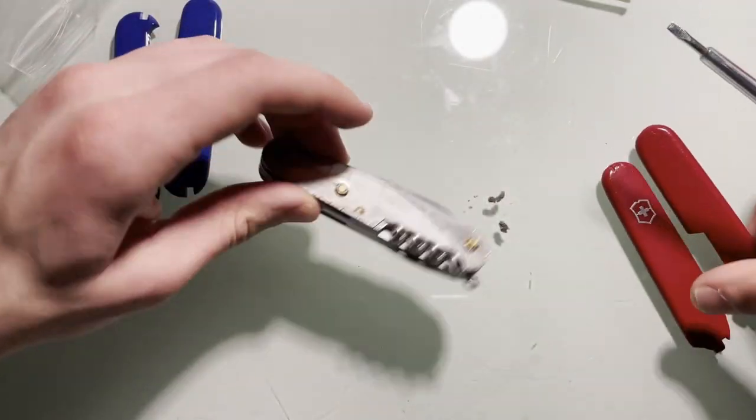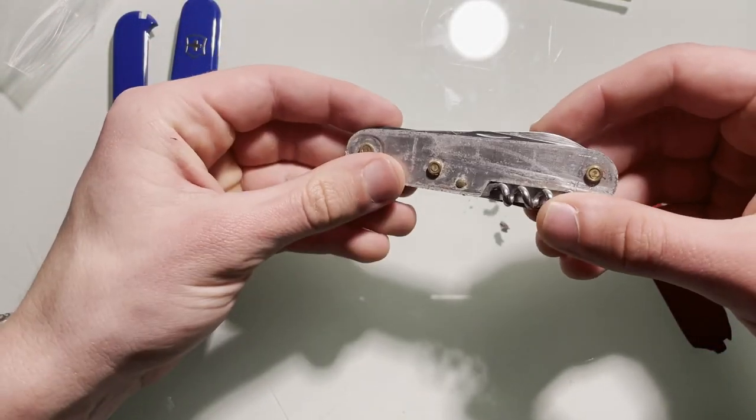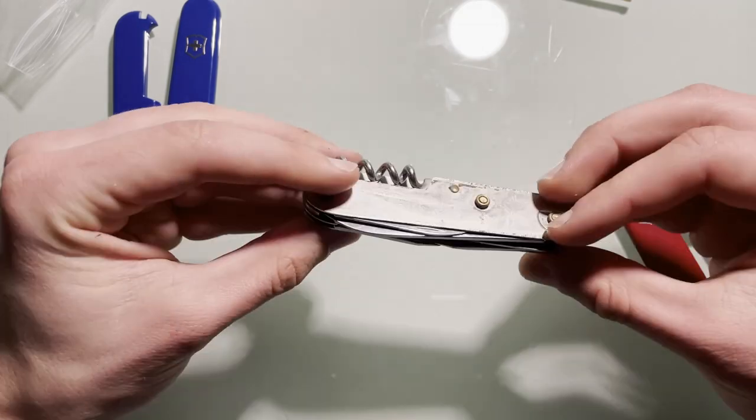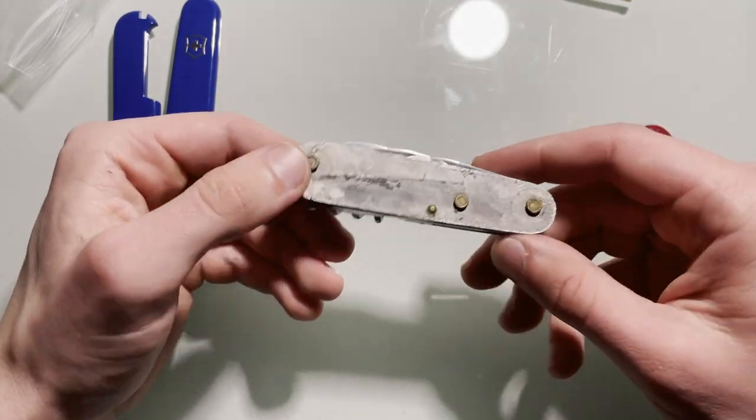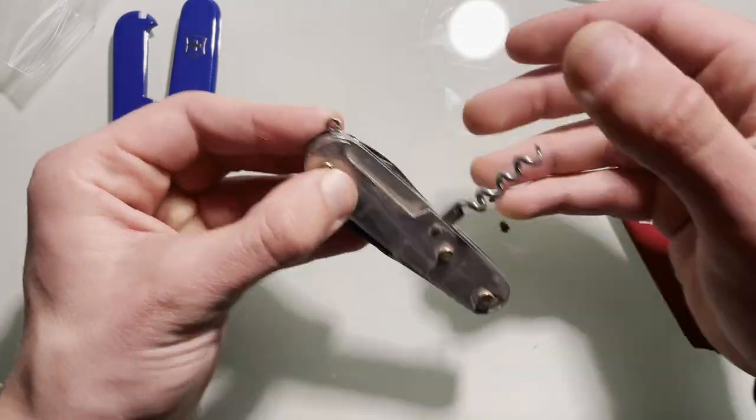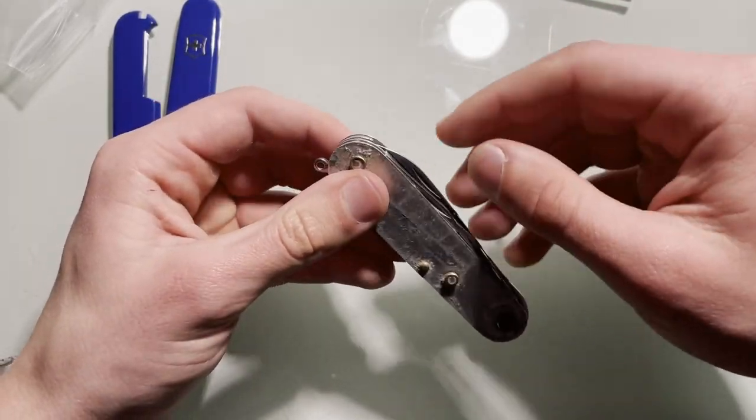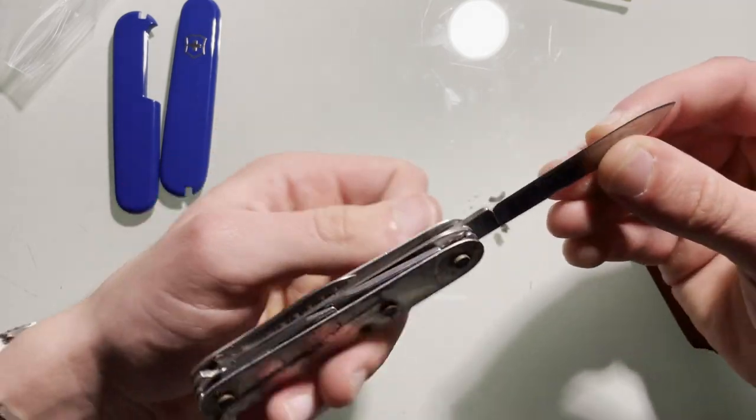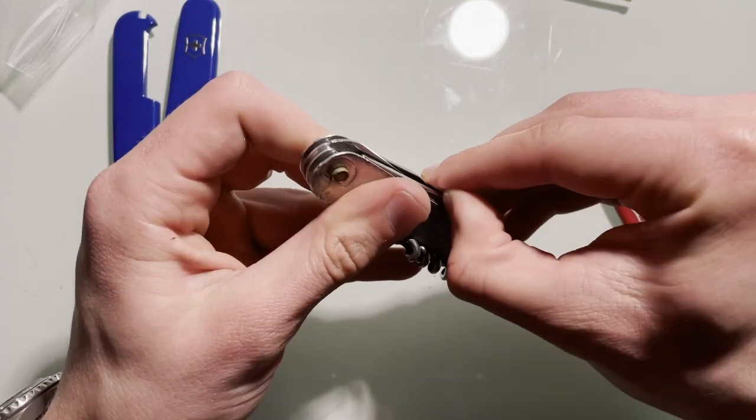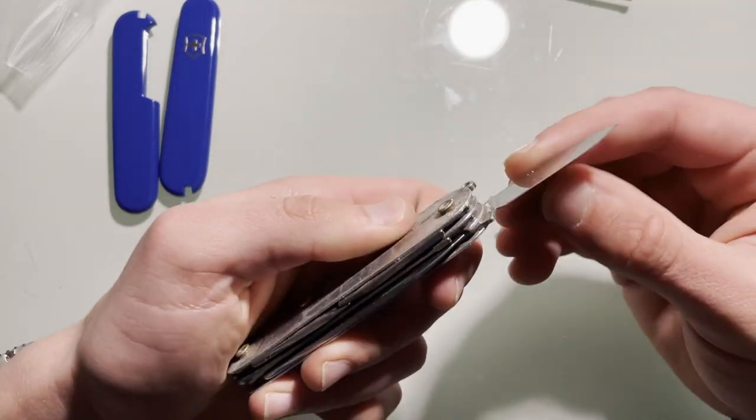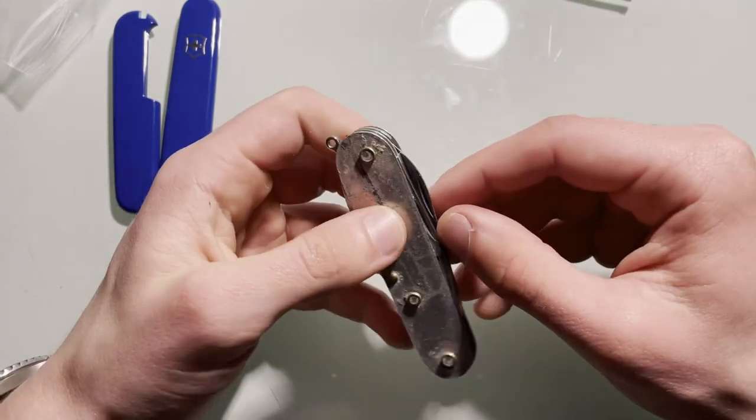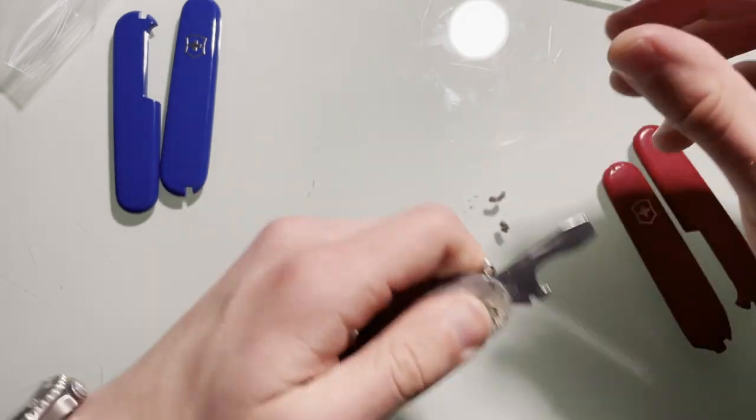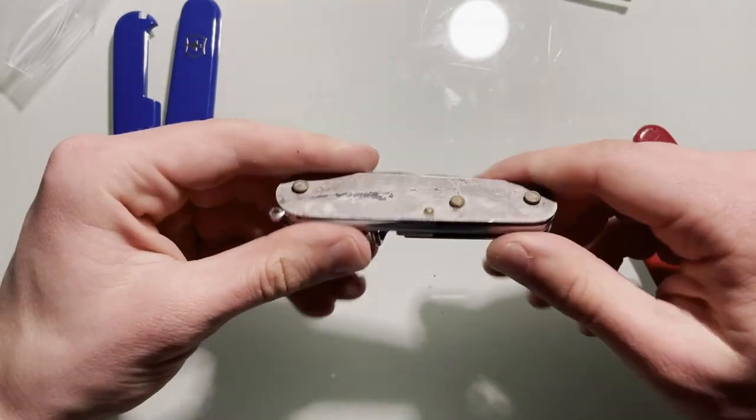This is what the Victorinox knife looks like without handles. Mine is 12 years old, I've carried it around a long time. Some springs don't work that well anymore. I have to put on some WD-40 or some oil. See, it just doesn't click that good anymore right here. It doesn't click that good, I have to put some oil in there.